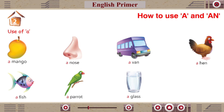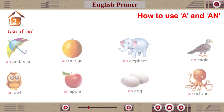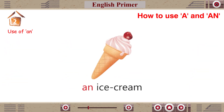A van, a hen, a fish, a parrot, a glass. Use of AN: an umbrella, an orange, an elephant, an eagle, an owl, an apple, an egg, an octopus, an ice cream.